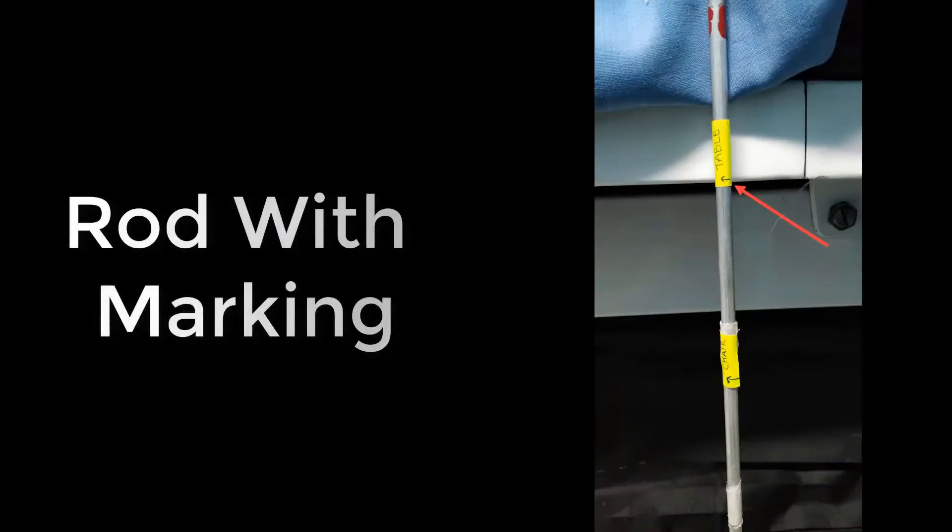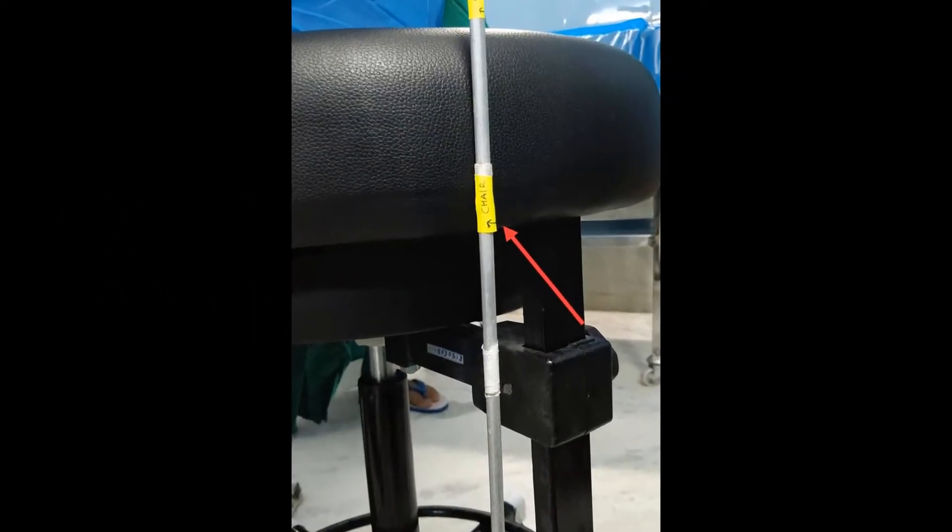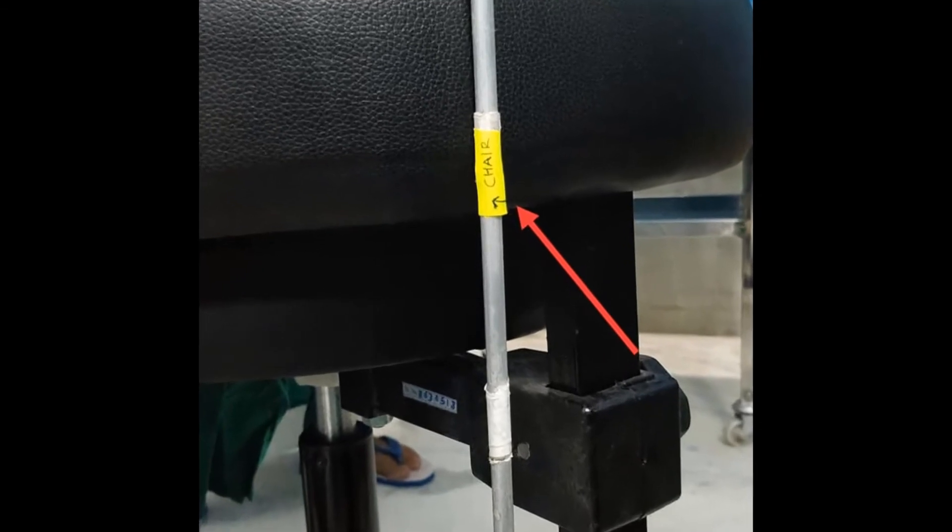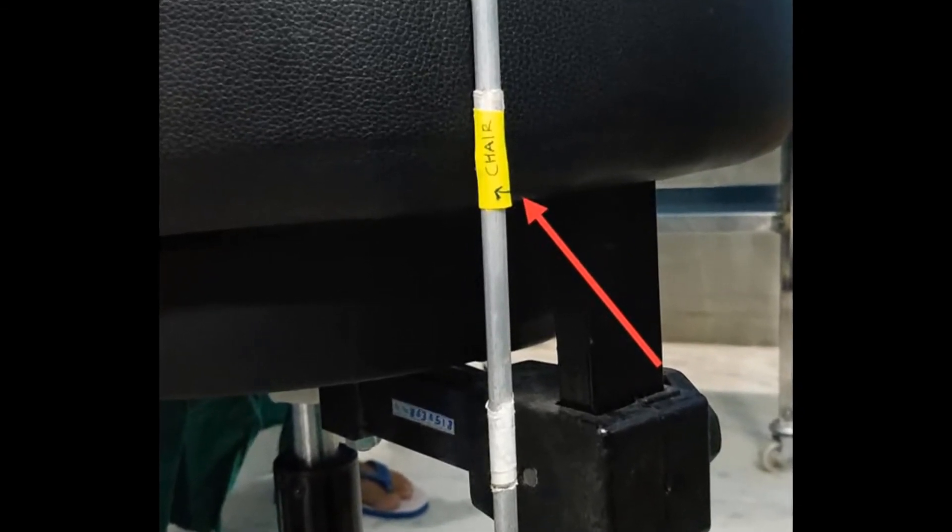A rod with marking can make your work easy. A metal rod with marking helps fix the table height and chair height for a specific surgeon with ease. This in turn helps in theatre flow and ergonomics.